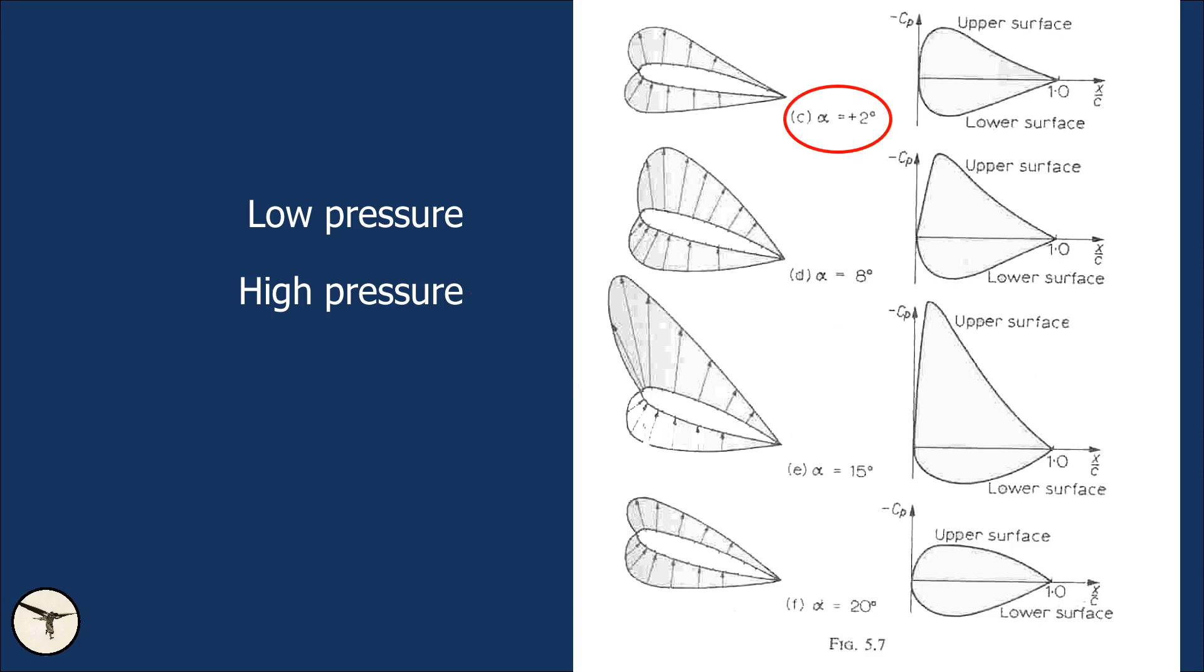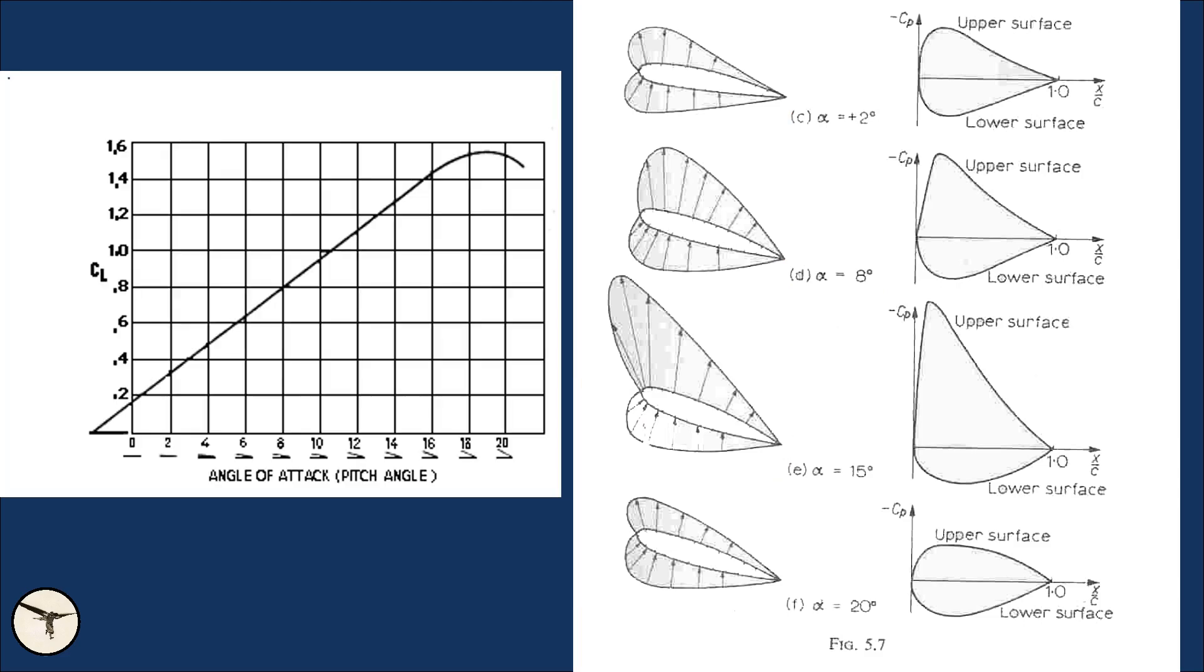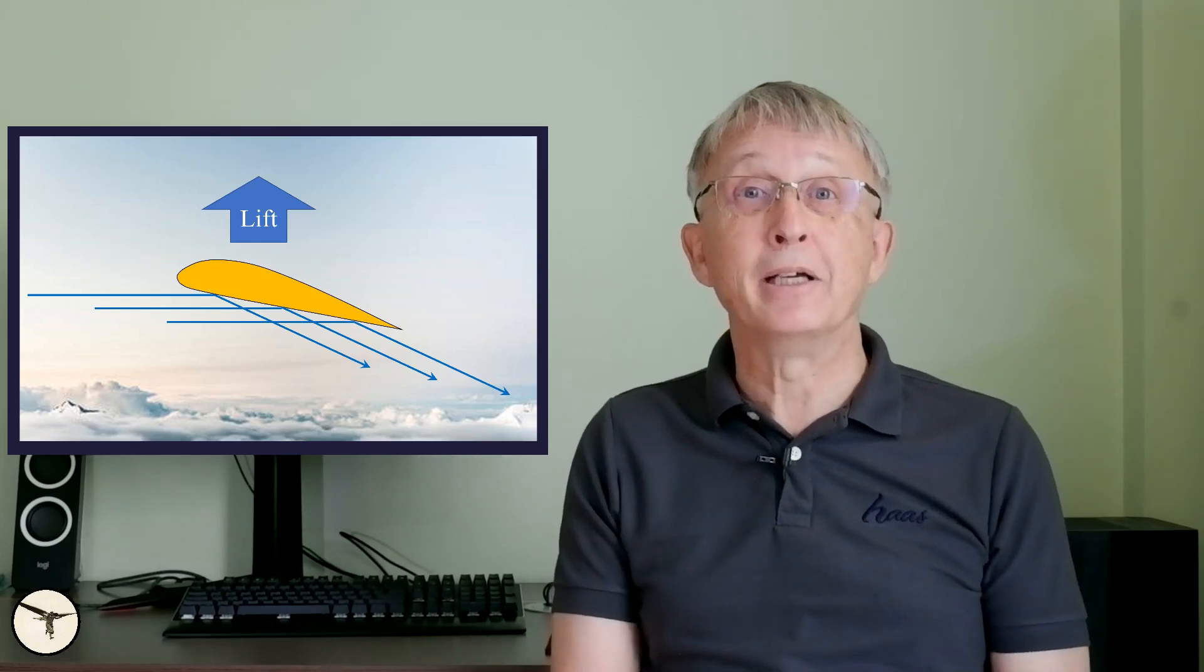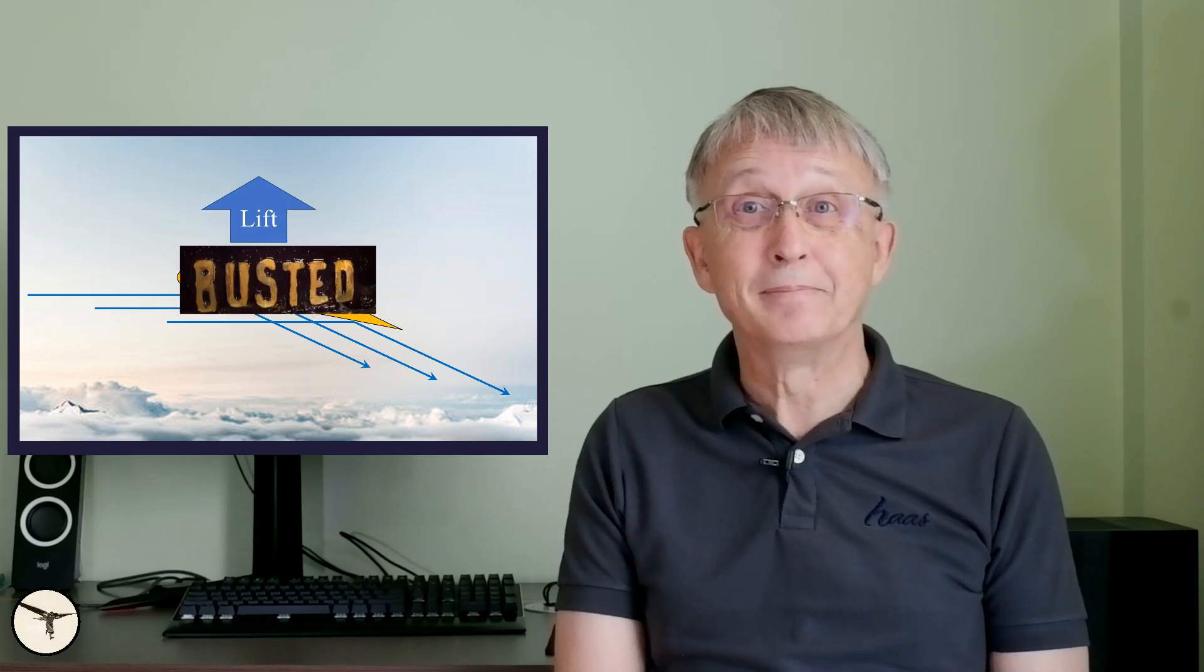When the angle of attack increases, the lower pressure area over the wing increases and moves forward, increasing the lift coefficient. Notice that the high pressure area under the wing remains near constant. When exceeding the critical angle of attack, the airflow over the wing separates, causing loss of lift. And that is stall. You cannot explain lift by looking at only one side of the wing. Busted.